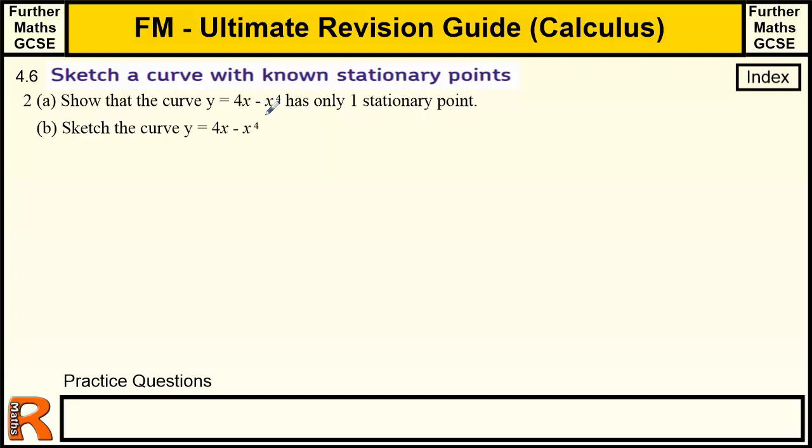This is a quartic. It's got a power of 4 on it. We've got to show this only has one stationary point. So part A, again, it's not to do with this topic really. It's just 4.5 stationary points.